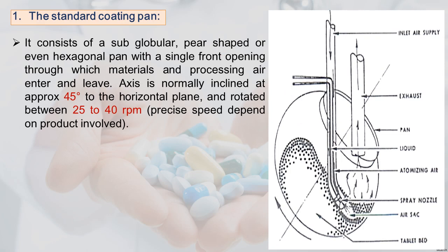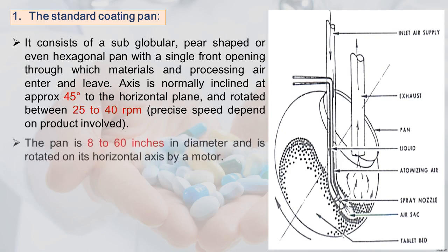The axis is normally inclined at 45 degrees to the horizontal plane and rotated at 25 to 40 RPM. Precise speed depends on the product. In tilted-axis coating pans, rotation speed must be adjusted to provide appropriate blending and uniform coating application — too low speed causes tablets to lump together, and too high drum speed produces centrifugal force that hinders free tablet movement, resulting in insufficient blending.